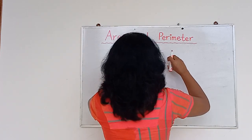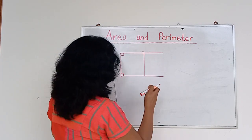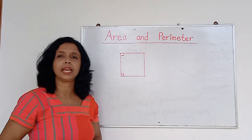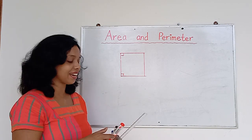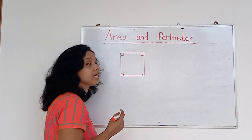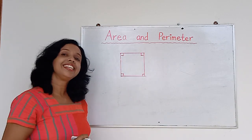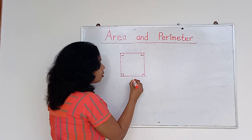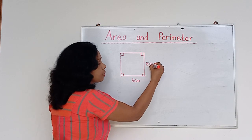Now I am going to explain something similar to the rectangle, but it's like this — a square. What is the special feature of a square? All sides are equal in size. So let's say if this side is 5 centimeters, then all sides should be 5 centimeters.